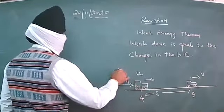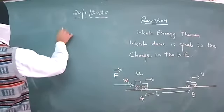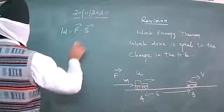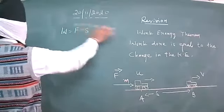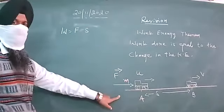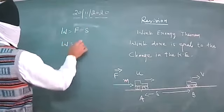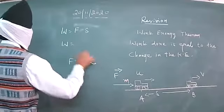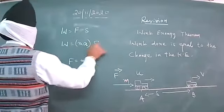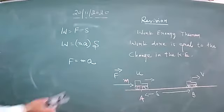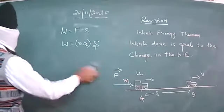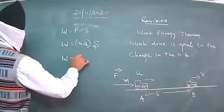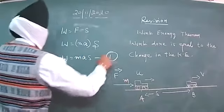When force is applied in the direction of the distance covered, work done W is equal to force into distance s, since force and distance covered are in the same direction. Work done is equal to F into s, and since force F is equal to m times a from Newton's law, work done equals m into a into s. Let us call this equation number one.